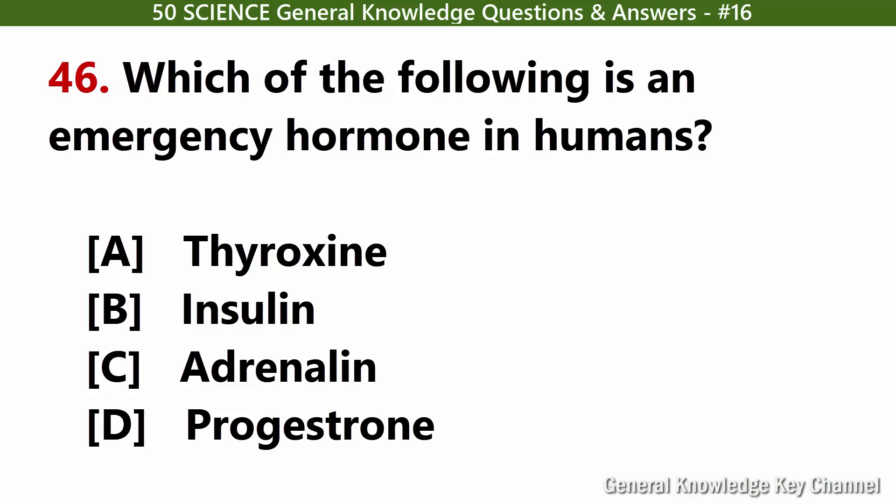Which of the following is an emergency hormone in humans? Answer C: Adrenaline.